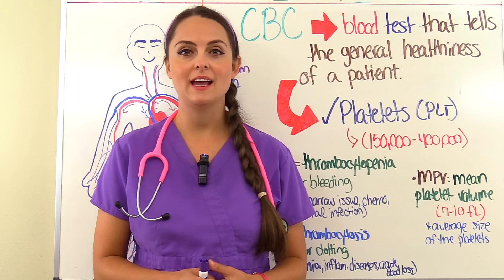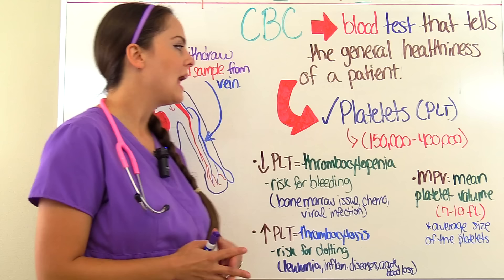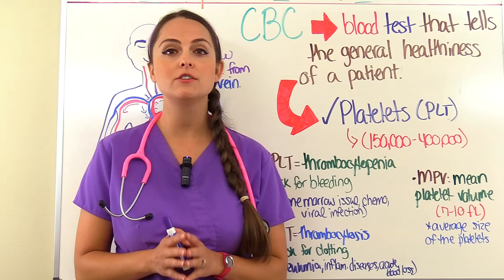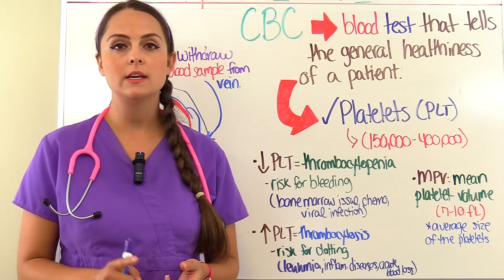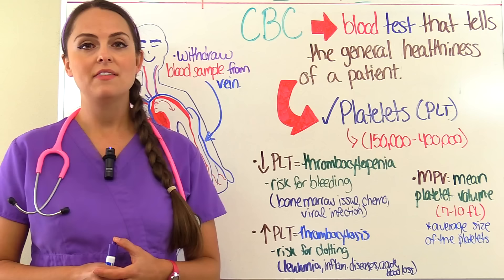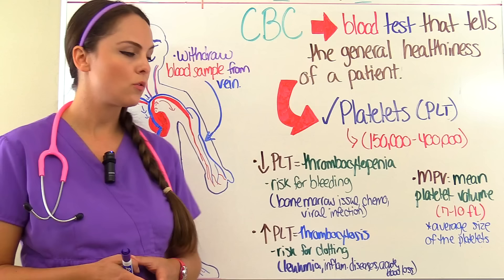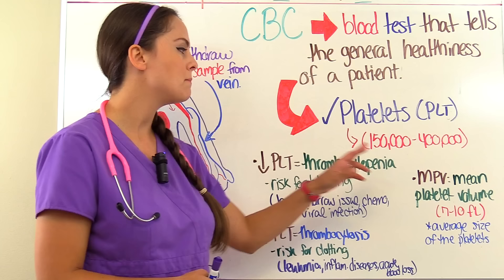Lastly, we have platelets, abbreviated as PLT. Platelets play a huge role in clotting — we need them whenever we're bleeding to stop the bleeding. A normal platelet count is about 150,000 to 400,000. A low platelet count is termed thrombocytopenia, and the patient is at risk for bleeding. Causes include bone marrow issues, chemotherapy agents, and viral infections. A high platelet count is termed thrombocytosis, with a risk for clotting, caused by leukemia, inflammatory diseases, or acute blood loss. The CBC also shows MPV (mean platelet volume), which measures the average size of the platelets.